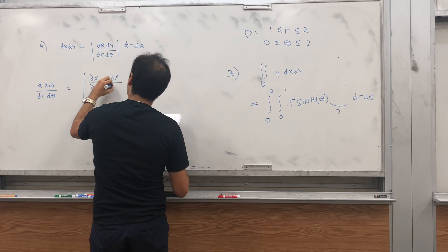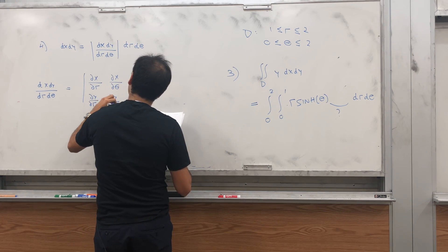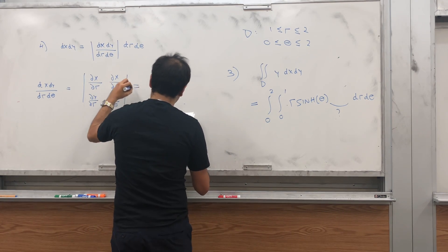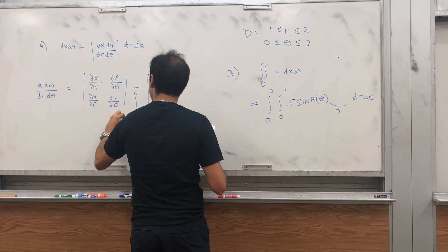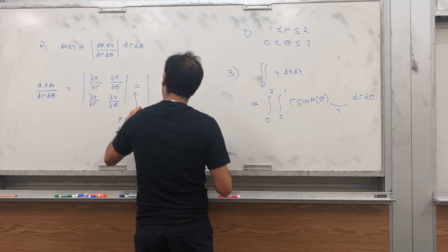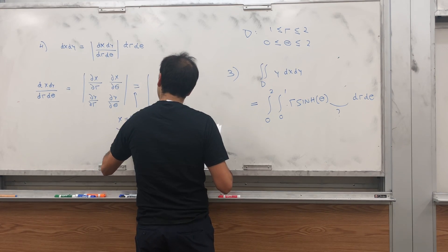And then what is that? So, dx dy over dr d theta. That's just a determinant of everything. dx dr dx d theta, dy dr, dy d theta. It might look like a hopeless case, but it's not. Because, remember, x is r cosh of theta. y is r sinh of theta.